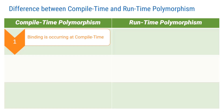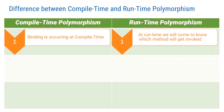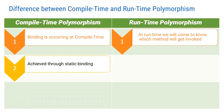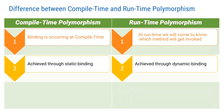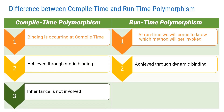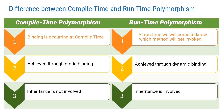In compile-time polymorphism, binding is actually occurring at compile-time. On the other hand, compile-time polymorphism is achieved through static binding, whereas run-time polymorphism is achieved through dynamic binding. Compile-time polymorphism is achieved through method overloading and operator overloading. Inheritance and method overriding are examples of run-time polymorphism.